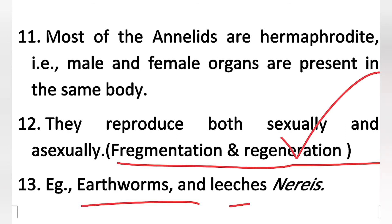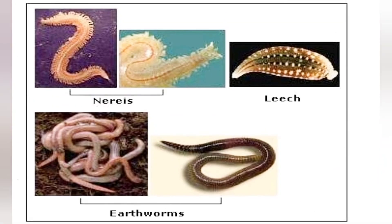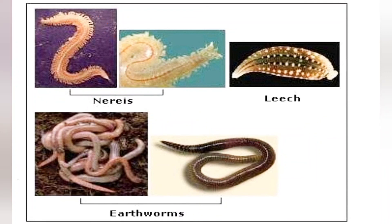Common examples of Phylum Annelida include earthworm, leech, and Nereis. You can see these organisms around you. The earthworm is a well-known example. So this is all about the topic for today. Thank you.